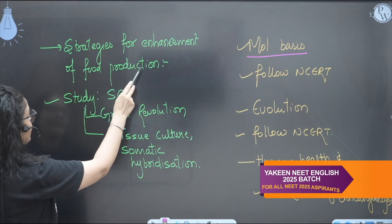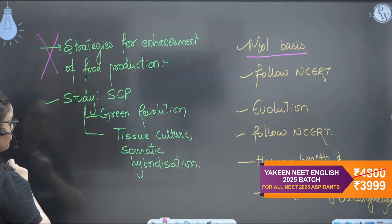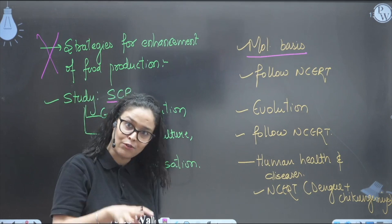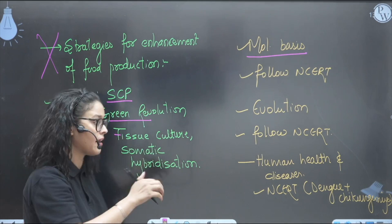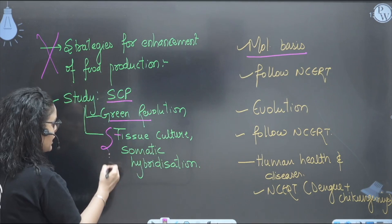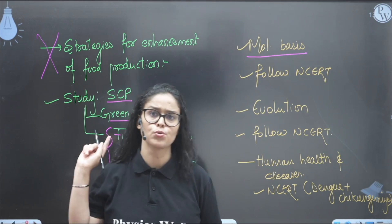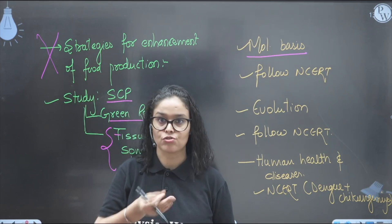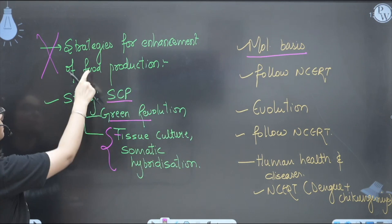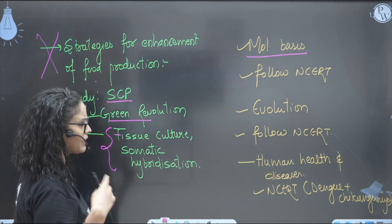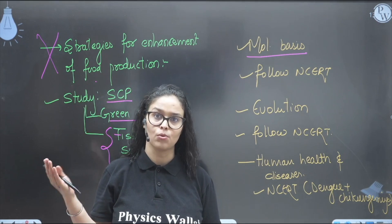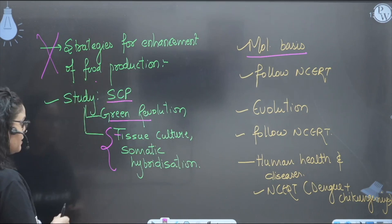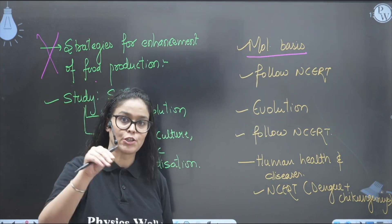The strategies for enhancement in food production chapter is fully deleted from the new NCERT, but single cell protein and green revolution have been added to the microbes chapter, so study these two topics there. Tissue culture and somatic hybridization have been shifted to biotechnology and application. Ask your teachers to cover these in the microbes and biotechnology chapters, or incorporate them in your notes.